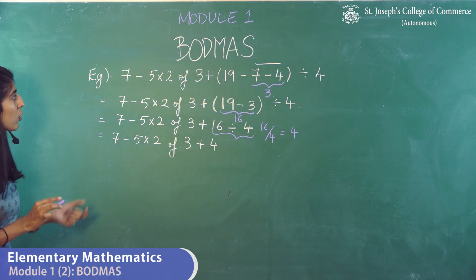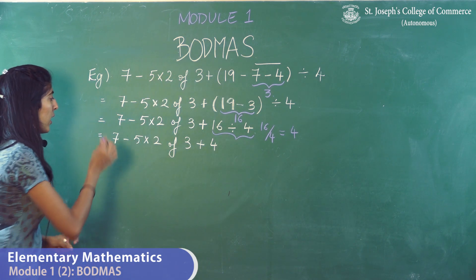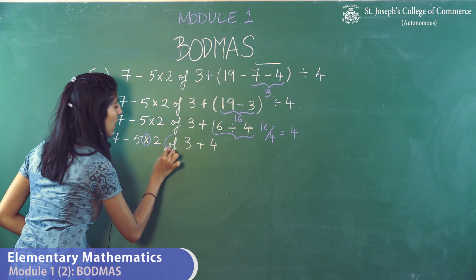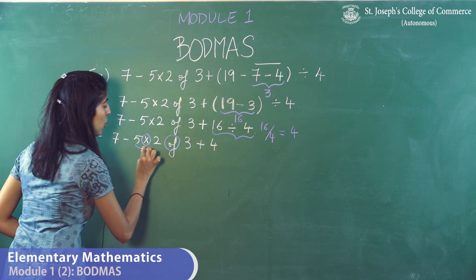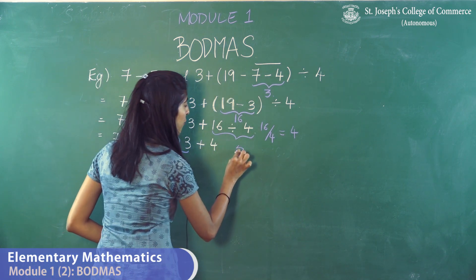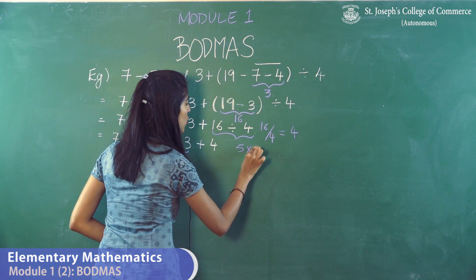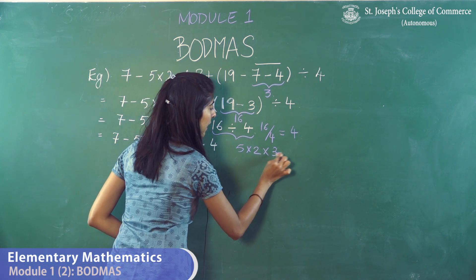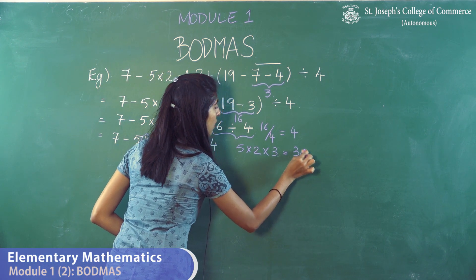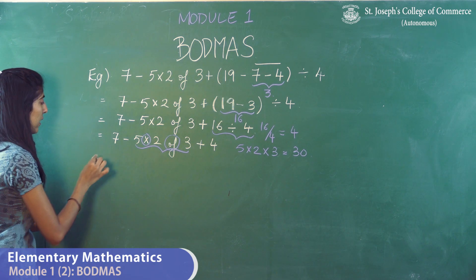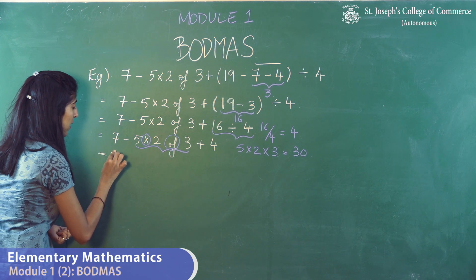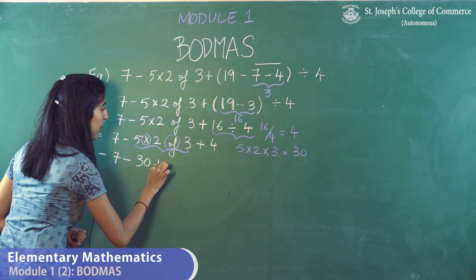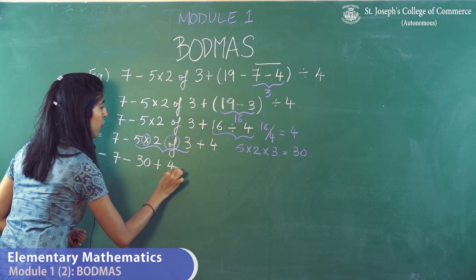The next thing to do is multiply. Both 'into' and 'of' represent multiplication here. So we solve 5 into 2 into 3, which gives 30. Rewriting the equation gives 7 minus 30 plus 4.